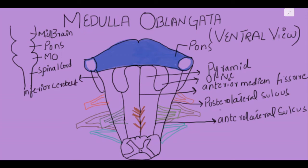This is the inferior cerebellar peduncle. Next we have the cranial nerves which arise from the ventral aspect of the medulla oblongata. There are four cranial nerves: 9, 10, 11, and 12 — the glossopharyngeal, vagus, accessory, and hypoglossal nerves.